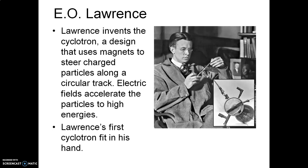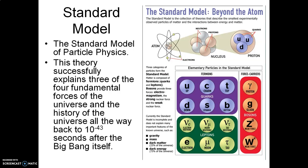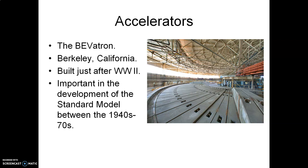Compare the cyclotron first invented by Lawrence that fit into the palm of his hand to this cyclotron here, called the Bevatron. The BEV stands for billions of electron volts — an electron volt is a metric SI unit describing the energies associated with subatomic particles. This was built just after the Second World War at the University of California at Berkeley. This machine and others like it were important in the development of what is called the Standard Model of Particle Physics, which took place over decades between the 1940s and the 1970s.